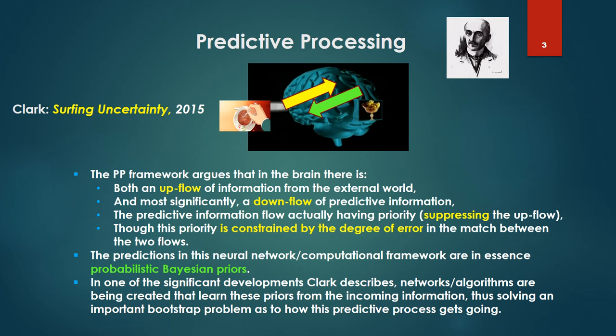The predictions in this neural network or computational framework are, in essence, probabilistic Bayesian priors. I'm not going to go much into Bayes' theorem. One only needs to know, for our purposes here, that we're talking a probabilistic framework of prediction and computing the probability of that prediction being true.